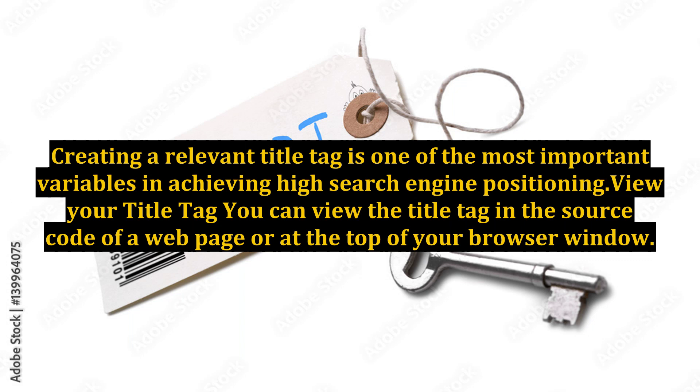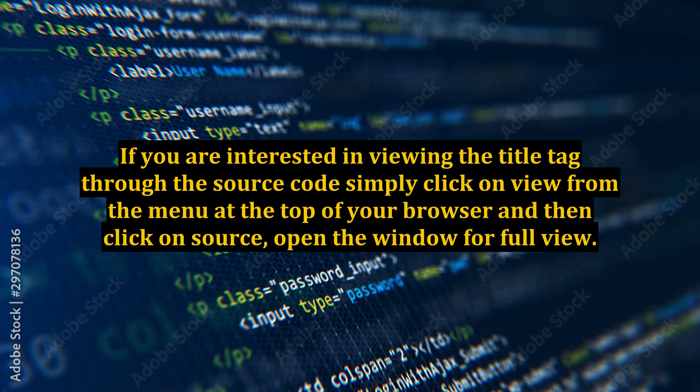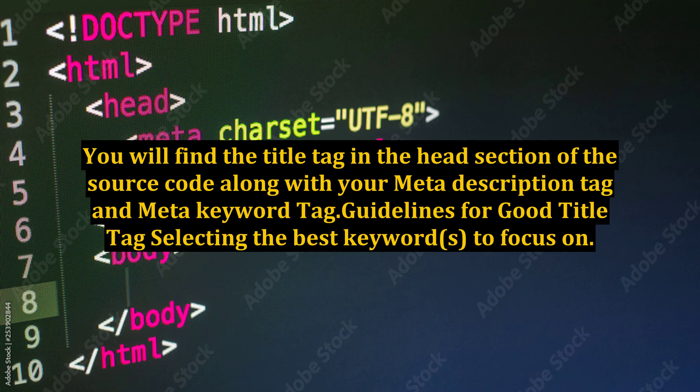You can view the title tag in the source code of a web page or at the top of your browser window. If you are interested in viewing the title tag through the source code, simply click on View from the menu at the top of your browser and then click on Source. You will find the title tag in the head section of the source code along with your meta description tag and meta keyword tag.